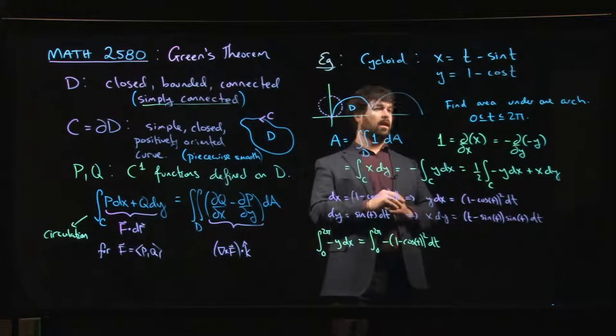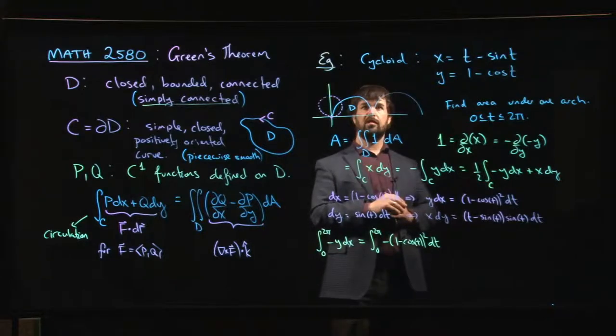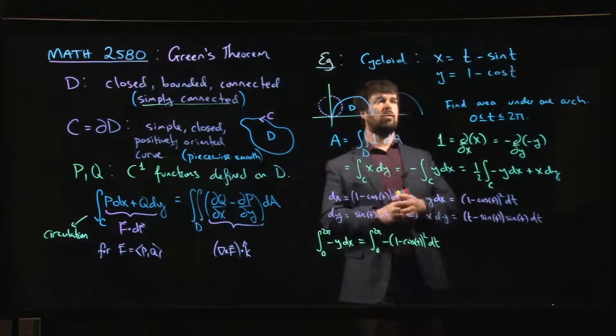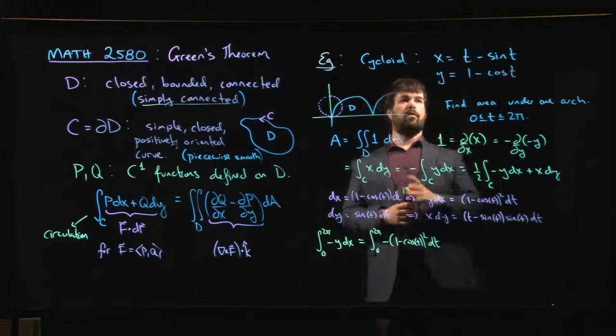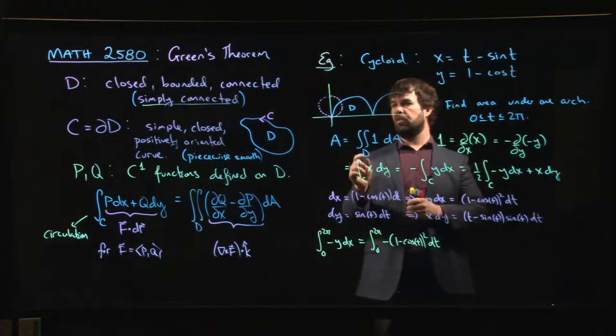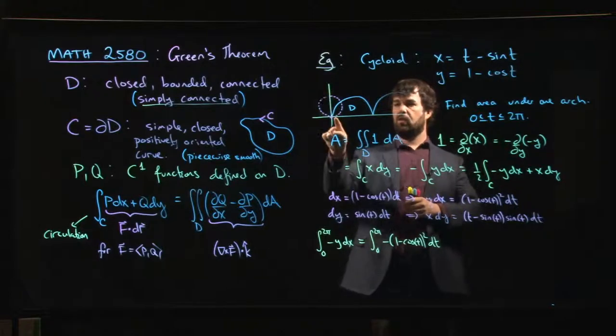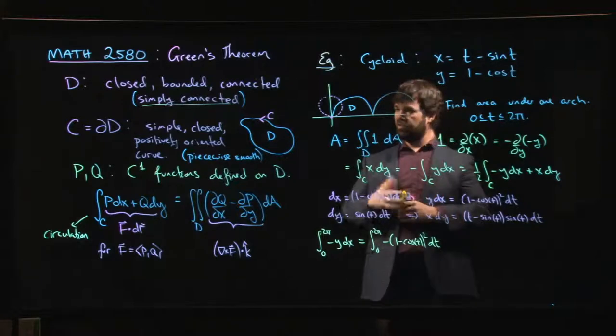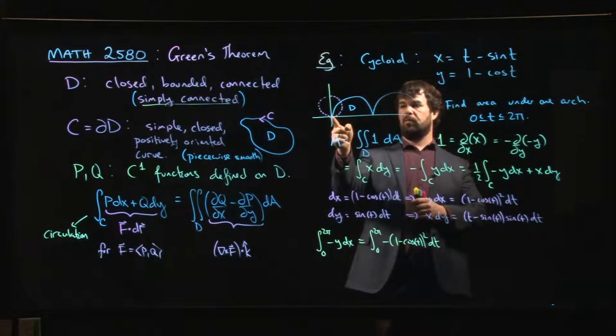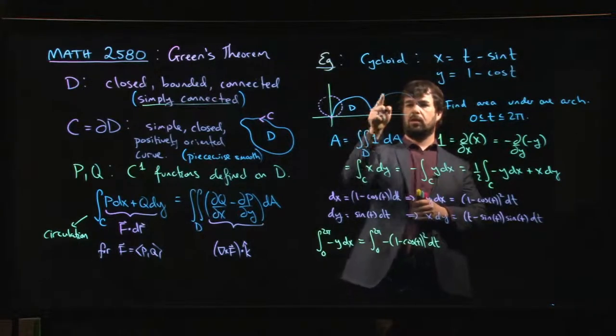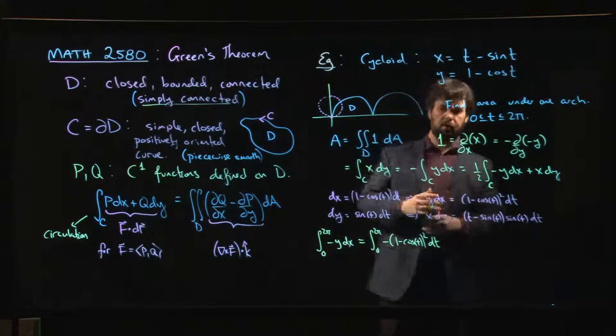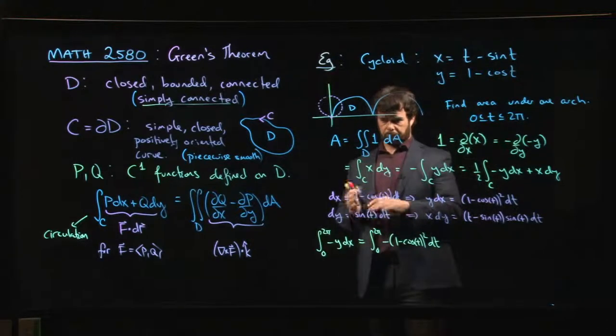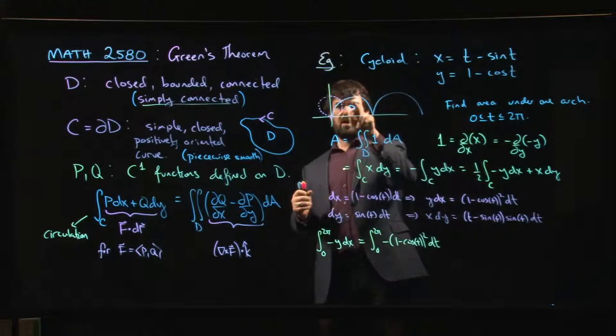So the problem is to find the area under one arch of a cycloid. Here are the parametric equations for the cycloid. The cycloid is this curve that's generated if you take a circle, mark a point, and start rolling the circle along the x-axis, watching the path followed by this point.